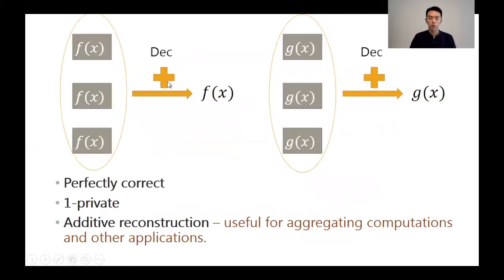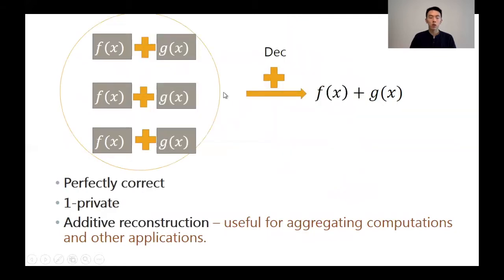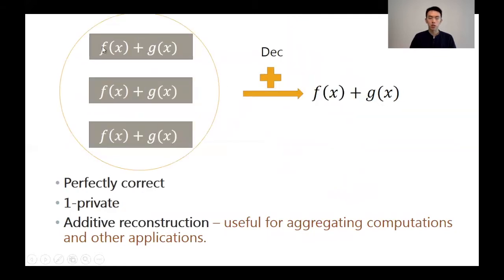This additive reconstruction is useful because, for instance, suppose we have an HSS for function f and for g — we can obtain an HSS for function f plus g by simply telling the servers to locally add up their output shares, respectively.